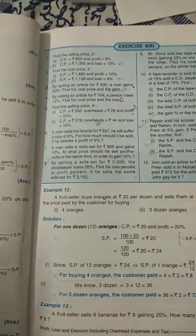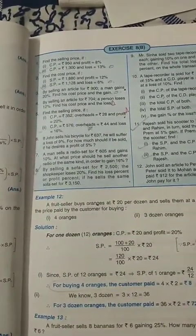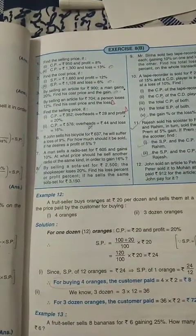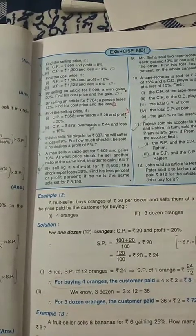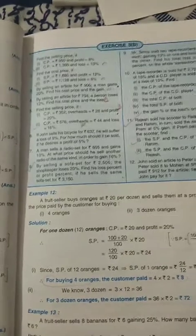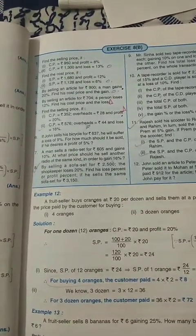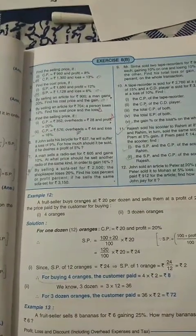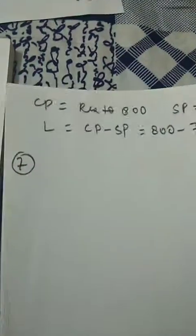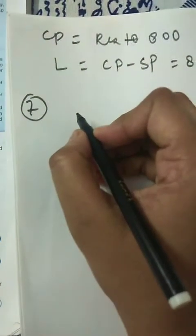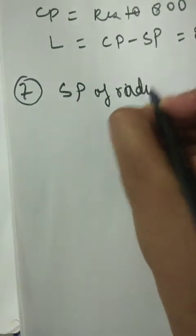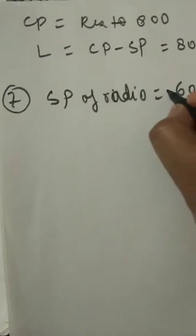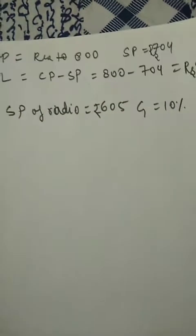Question 7: A man sells a radio set for rupees 605 and gains 10%. At what price should he sell another radio of the same kind in order to gain 16%? Selling price of the radio is given as 605 and gain percent is given as 10%.